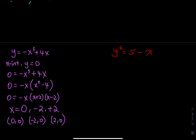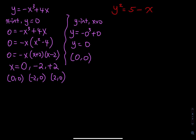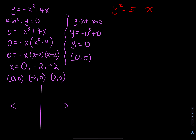For the y-intercept of y = -x³ + 4x, let x equal to 0: y = -(0)³ + 0 = 0. So the origin (0, 0) is both the x-intercept and the y-intercept. I want to show you what the graph looks like, though you won't need to sketch this by hand.